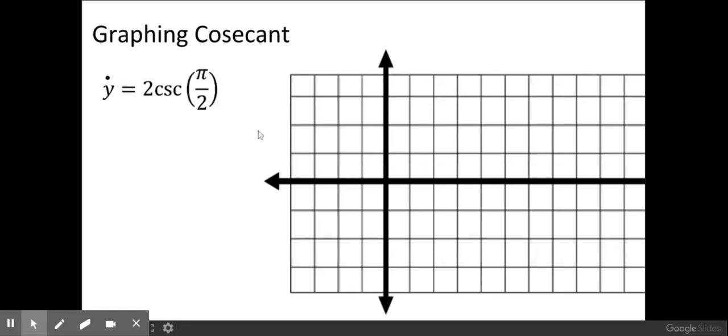For this video we'll be graphing cosecant. So for cosecant the first step is to identify amplitude and period.